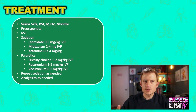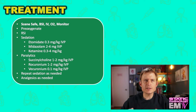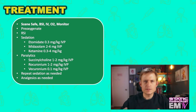The benefit to providing higher dose ketamine is it will actually improve pulmonary compliance, which can be beneficial when you're intubating somebody with COPD or asthma. After my sedative has had time to work, I'll then administer a paralytic. Common paralytics are things like succinylcholine, rocuronium, and vecuronium.